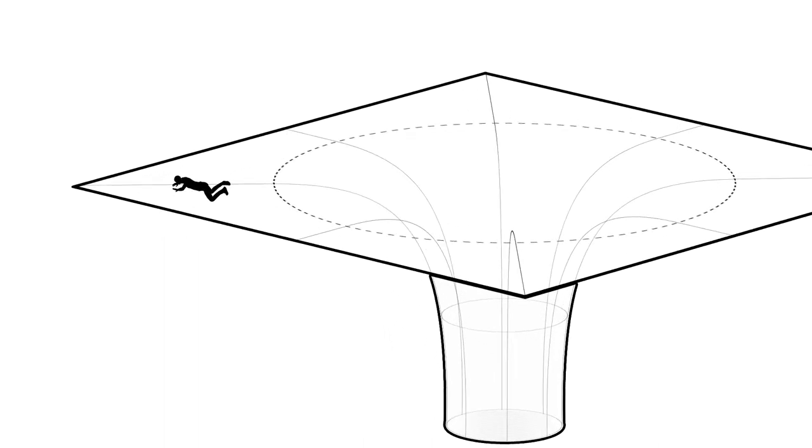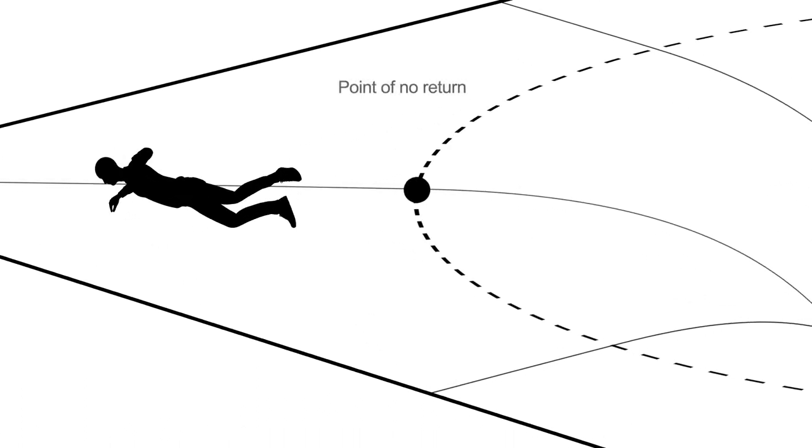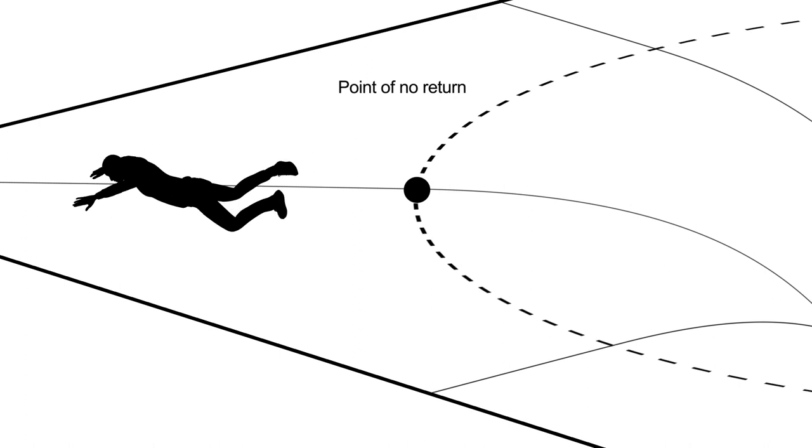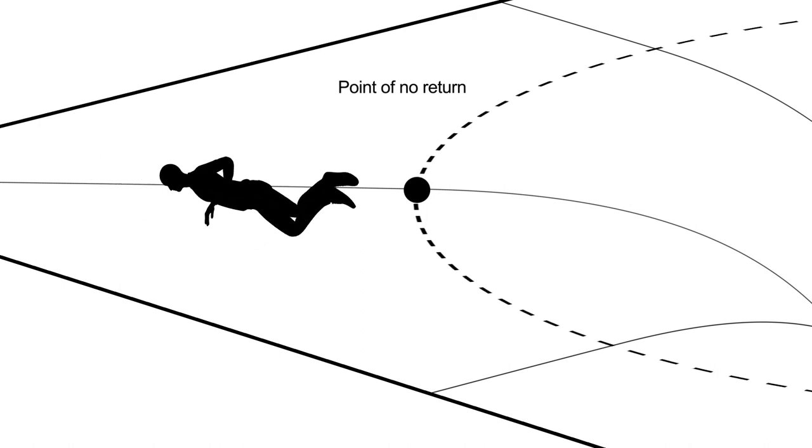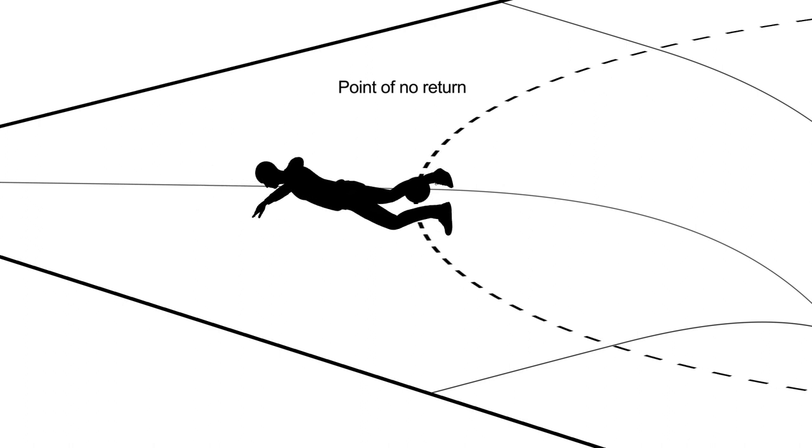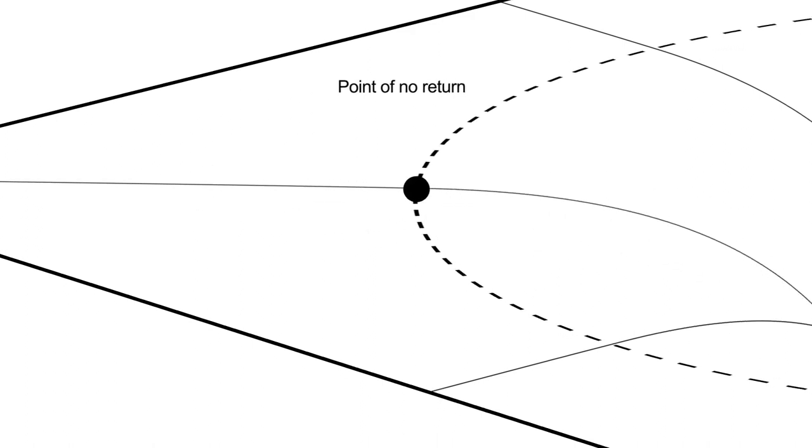The event horizon is the imaginary boundary in time and space beyond which there is no return to the outer part of this universe. It defines the line after which the social and economic price of leaving those platforms becomes too high.